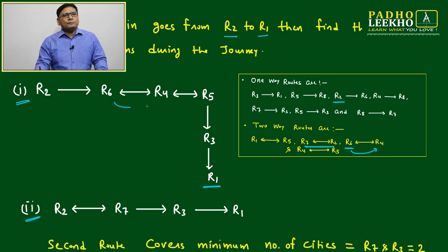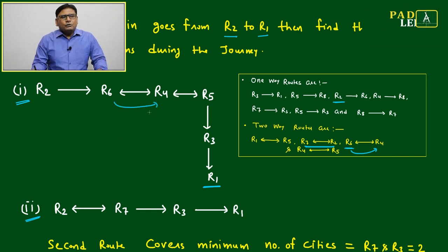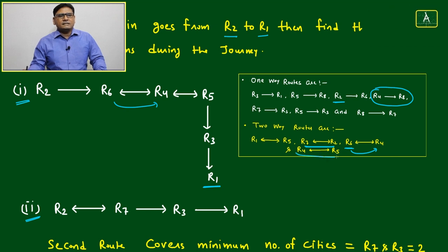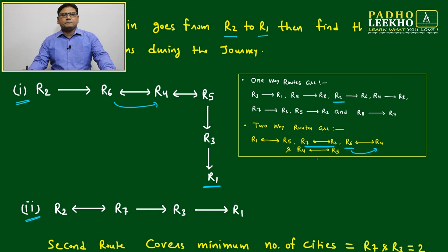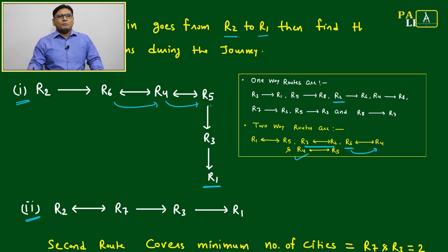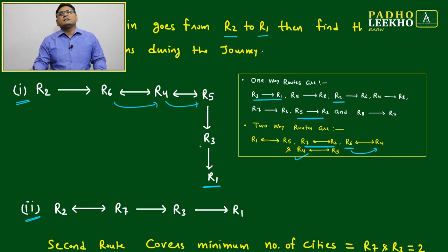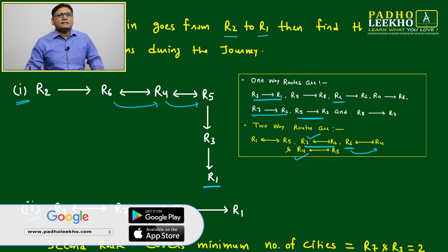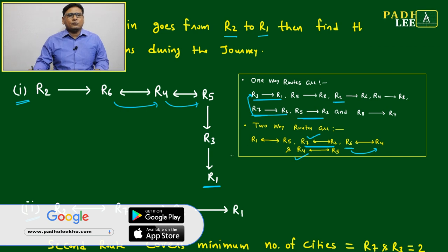From R4, you have two options: go to R5 or go to R8. If we pick R4 to R5, then from R5 to R3, and from R3 to R1 — that is one valid route. The other possibility from R2 is to go directly to R7, then from R7 there is a direct route to R3, and from R3 to R1.